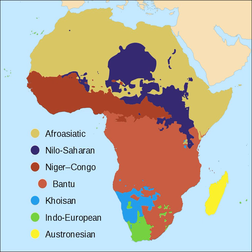The Niger-Kordofanian language family, joining Niger-Congo with the Kordofanian languages of South Central Sudan, was proposed in the 1950s by Joseph Greenberg. Today, linguists often use Niger-Congo to refer to this entire family, including Kordofanian as a subfamily. One reason is that it is not clear whether Kordofanian was the first branch to diverge from the rest of Niger-Congo, as Mande has been claimed to be equally or more divergent. Niger-Congo is generally accepted by linguists, though a few question the inclusion of Mande and Dogon, and there is no conclusive evidence for the inclusion of Ubangian.